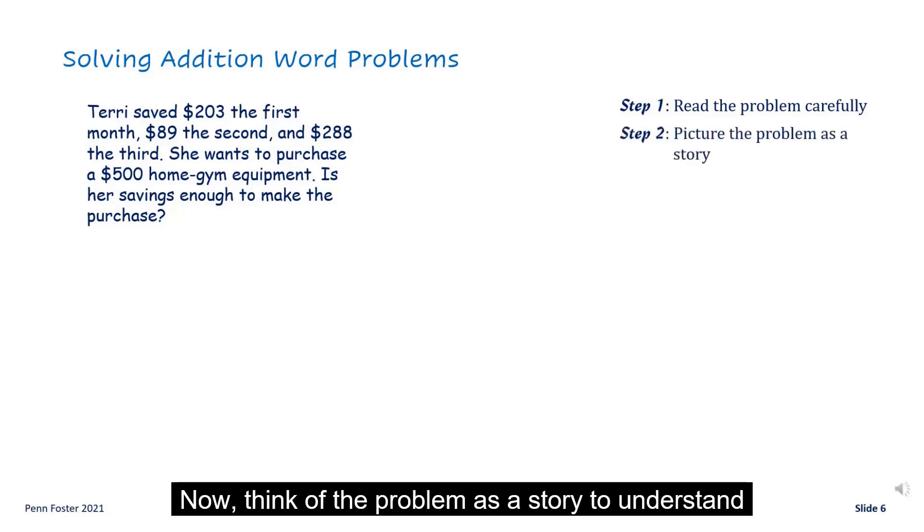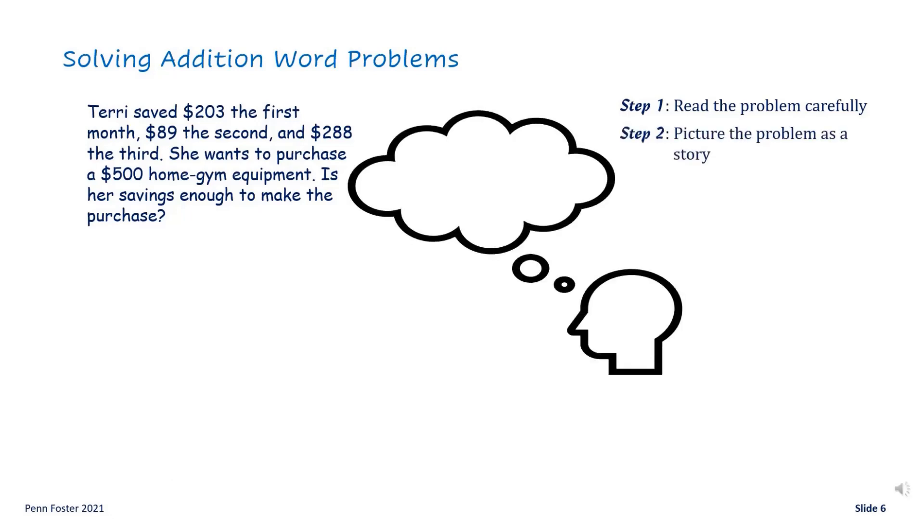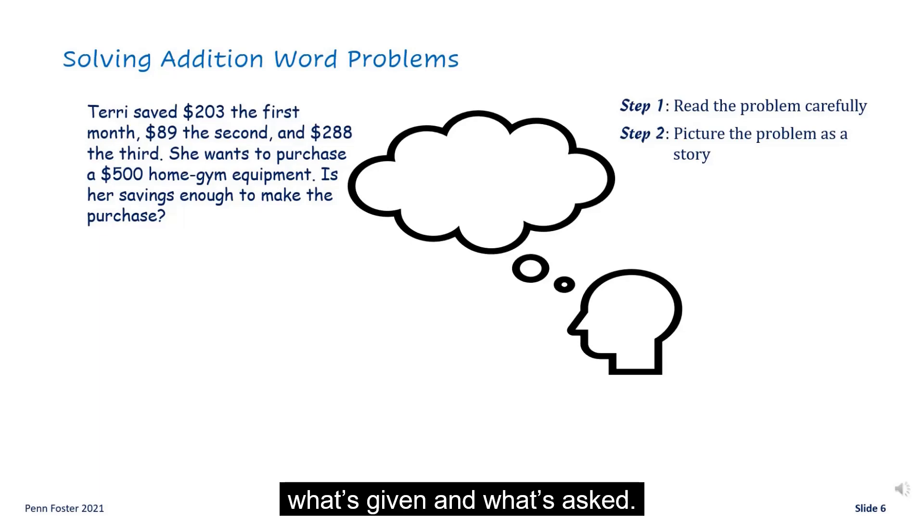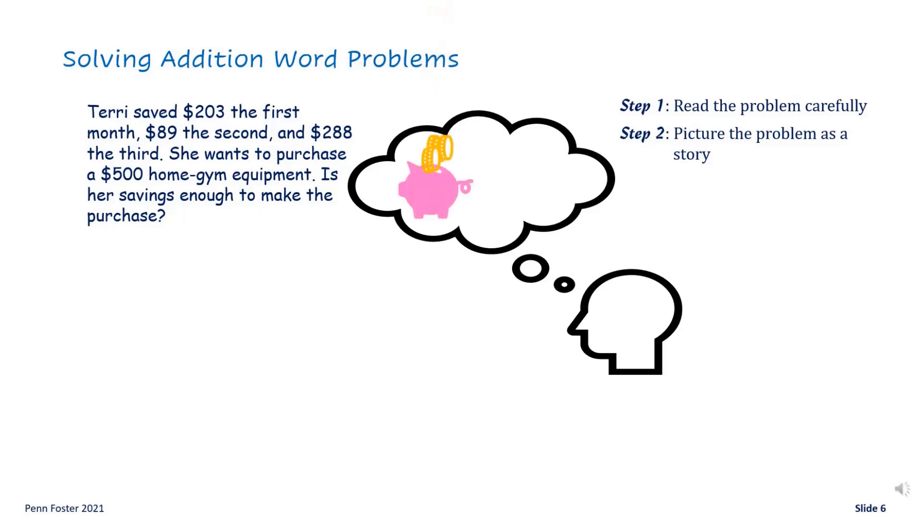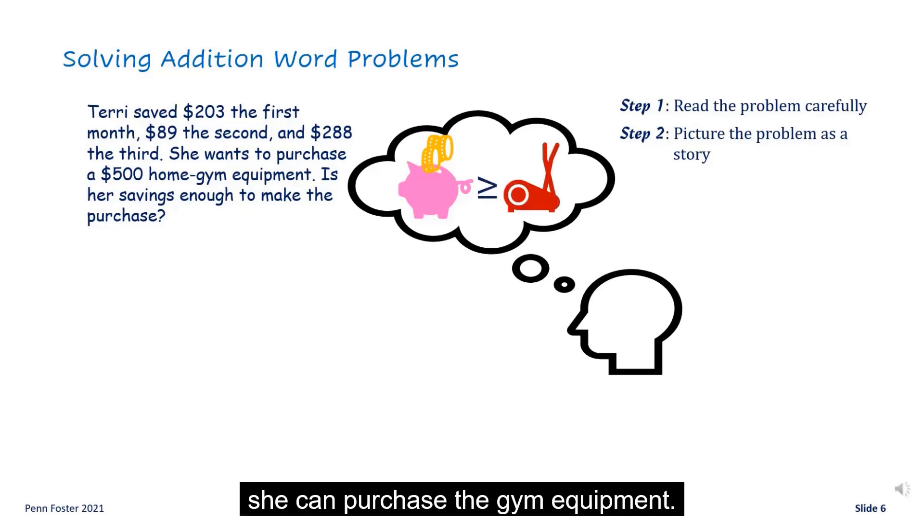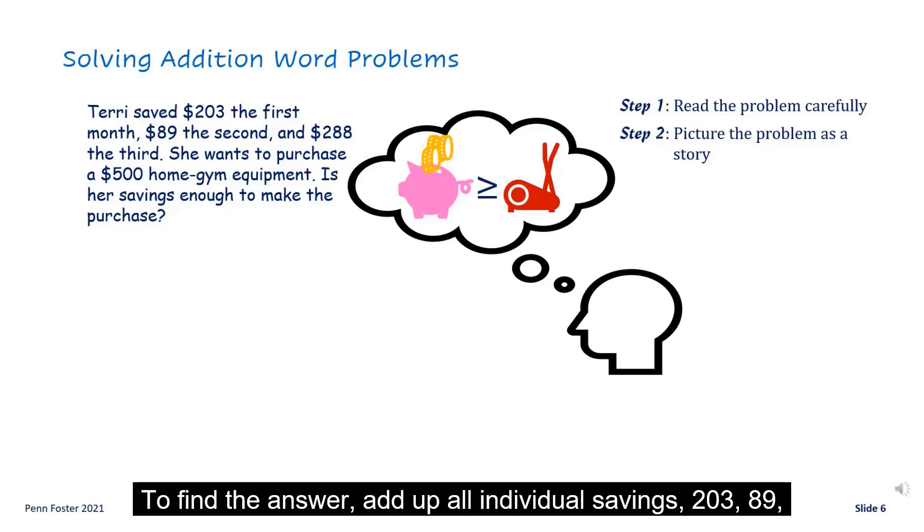Now think of the problem as a story to understand what's given and what's asked. So Terry saved three amounts, and she wants to make a decision on whether she can purchase the gym equipment. To find the answer, add up all individual savings.